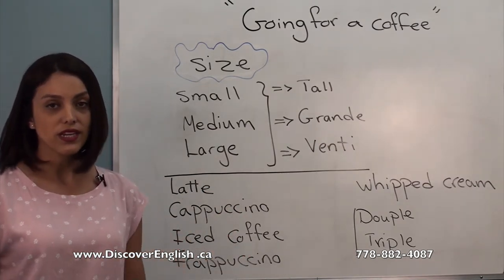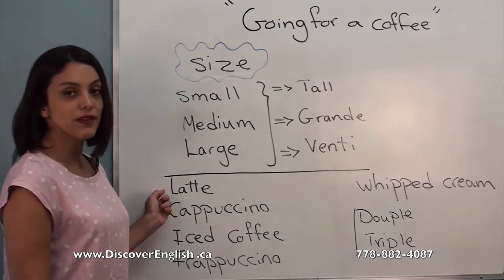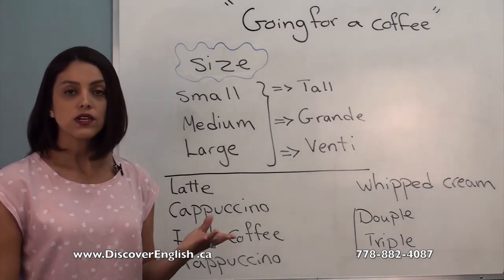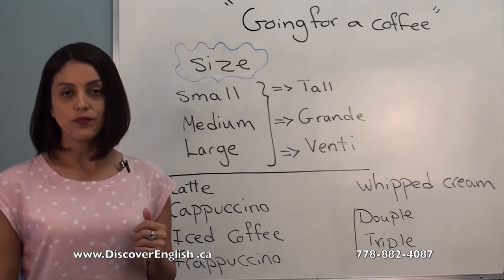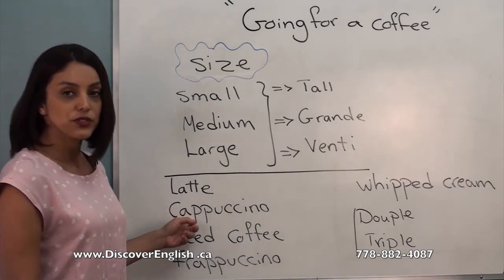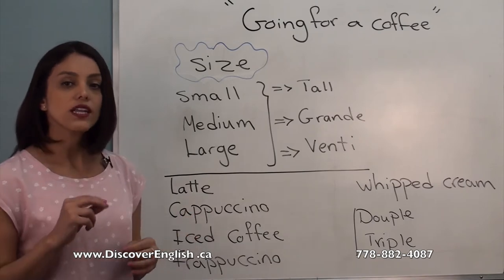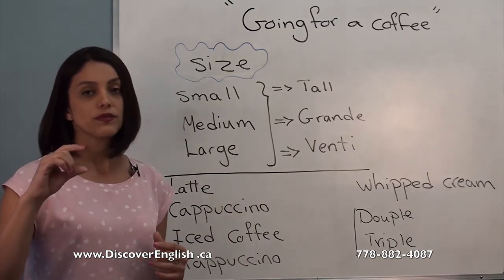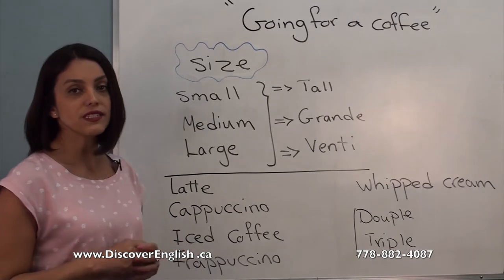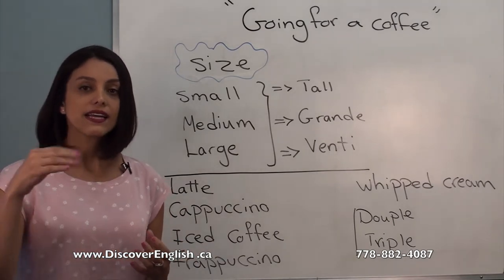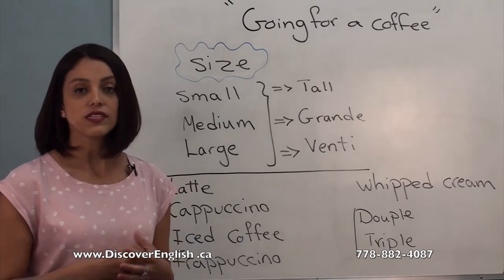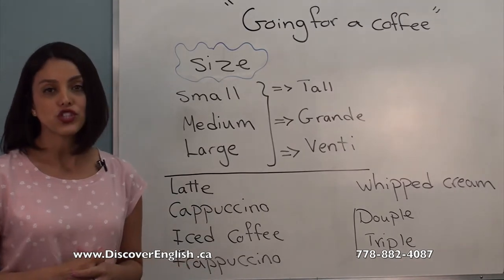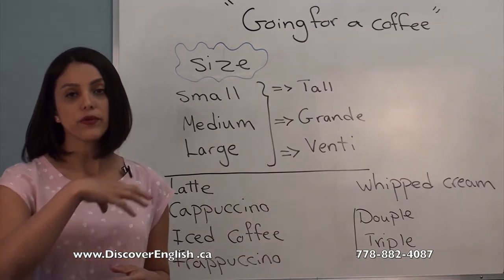Let's go over the very common, general drinks at Starbucks. A latte is hot milk plus one or more shots of espresso. A cappuccino is also hot milk plus one or more shots of espresso, but with foam on top. Iced coffee is coffee that they cool down and add ice to — it's a great treat for summertime. And frappuccino usually comes with whipped cream on top.